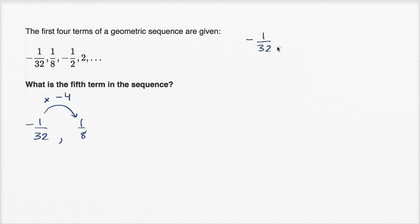negative 1/32 times negative four, that's the same thing as times negative four over one, it's going to be positive, negative times a negative is a positive, positive four over 32, which is equal to 1/8.